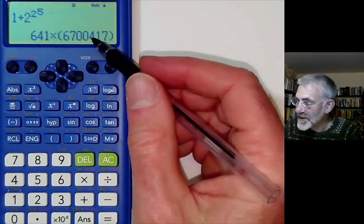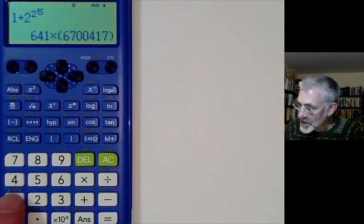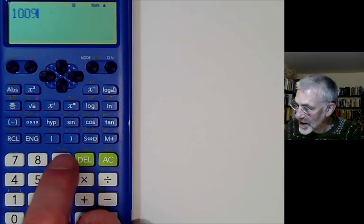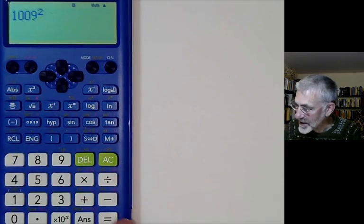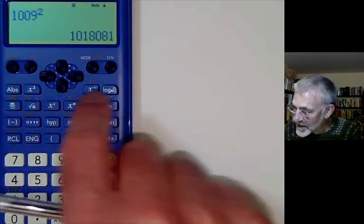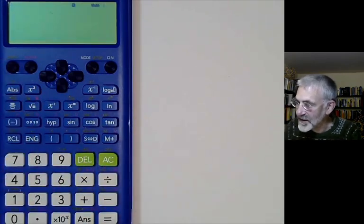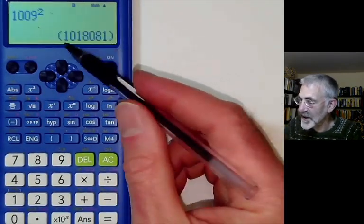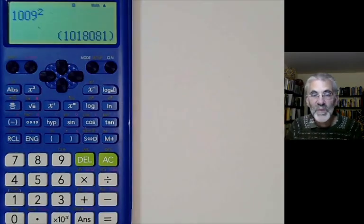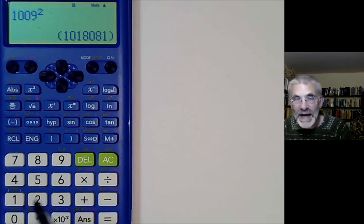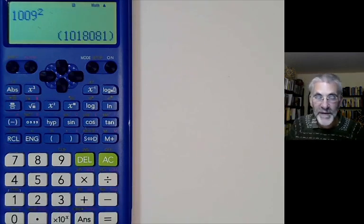I should say I found by experimenting that their factorisation routine isn't actually all that perfect. For instance, if I take 1009 and square it and try and factor this, it ought to be detecting the factor of 1009, but instead it just gives up. What it appears to be doing is just checking all numbers up to 1000 to see if they are factors and then giving up after that.